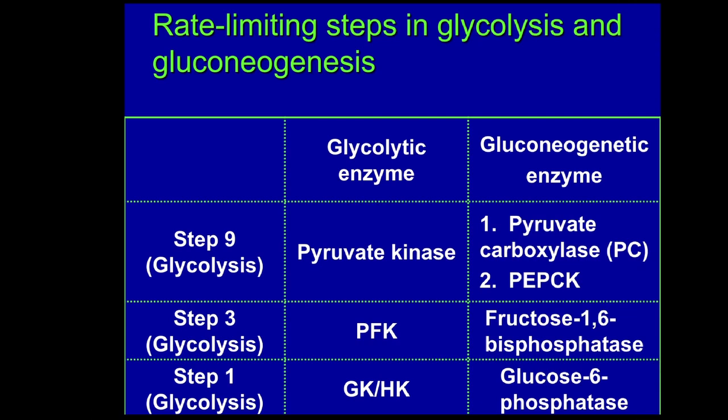Regulation of glycolysis is dependent on the regulation of three rate-limiting enzymes: pyruvate kinase, phosphofructokinase 1, and glucokinase or hexokinase. On the other hand, gluconeogenesis is dependent on the regulation of the bypass enzymes: pyruvate carboxylase, PEP carboxykinase, fructose 1,6-bisphosphatase, and glucose 6-phosphatase.